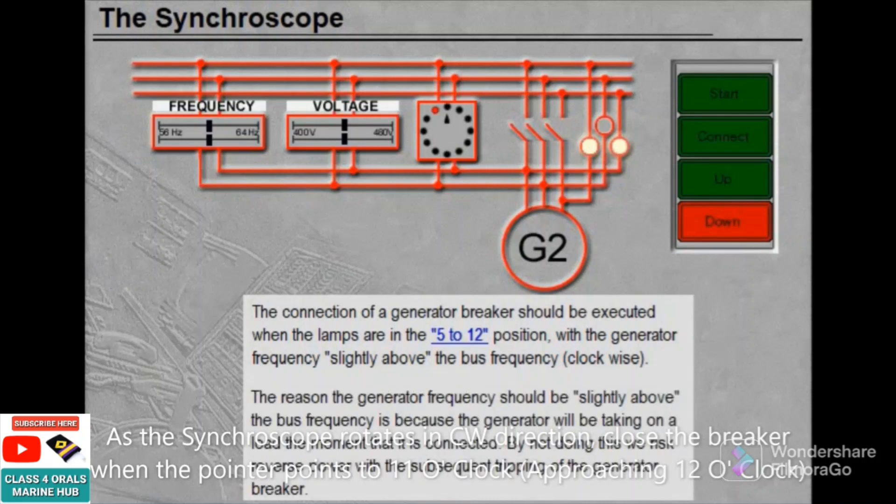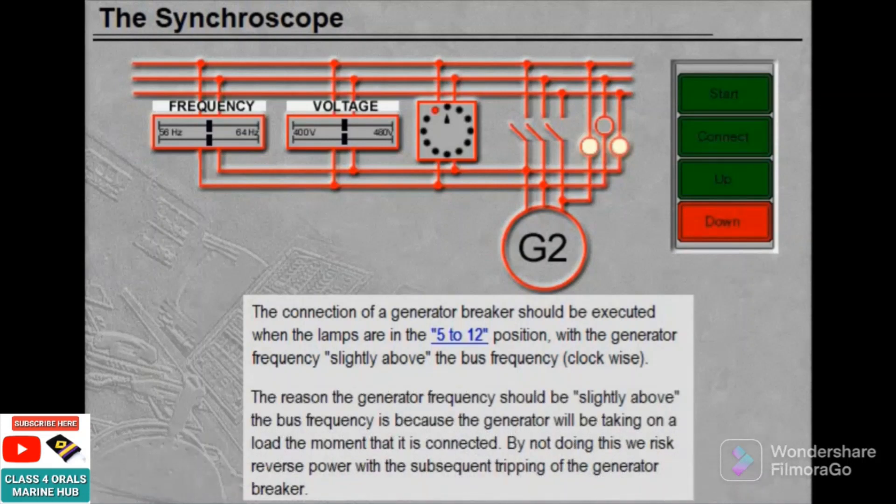The reason the generator frequency should be slightly above the bus frequency is because the generator will be taking on a load the moment that it is connected. By not doing this, we risk reverse power with the subsequent tripping of the generator breaker.